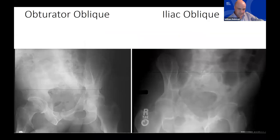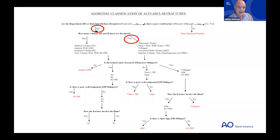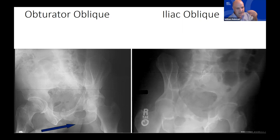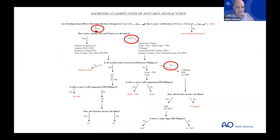The next question: is the ischial ramus fractured? Yes — the obturator ring is broken. It's subtle but it's there, and it's a big indicator of what's going on with the fracture. With both columns broken and the ischial ramus broken, we're down to three possibilities: T-type, associated both-column, or anterior column posterior hemi-transverse.